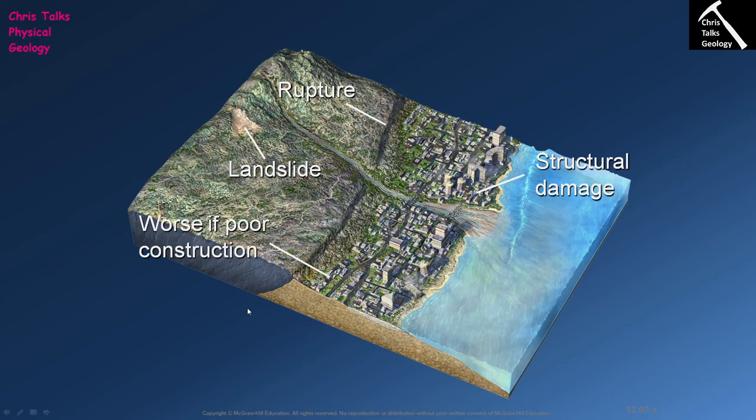Typically the more poorly constructed your building is, the more likely it is to fail during an earthquake. Over time, as building standards have become more rigorous, the quality of buildings has improved. If you live in a new, well-constructed building, it should do better in an earthquake compared to an older building which may not have been built under such rigorous standards.